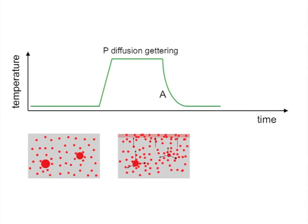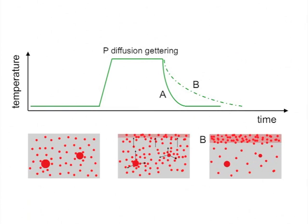However, it is possible to engineer the distribution and concentration of defects during solar cell processing to reduce their negative impact.